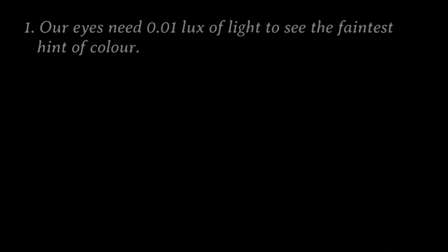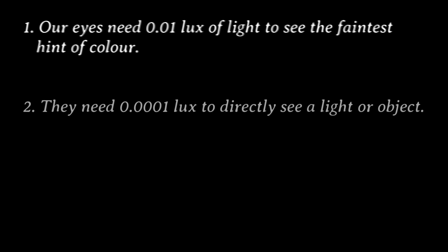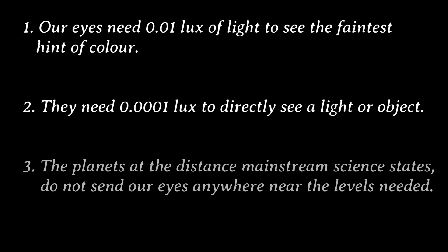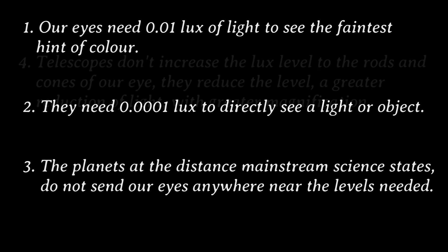1. Our eyes need 0.01 lux of light to see the faintest hint of color. 2. They need 0.0001 lux to directly see a light or object. 3. The planets at the distance mainstream science states don't send our eyes anywhere near the levels needed.